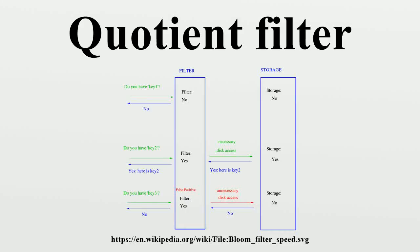A quotient filter, introduced by Bender Eyal in 2011, is a space-efficient probabilistic data structure used to test whether an element is a member of a set. A query will elicit a reply specifying either that the element is definitely not in the set, or that the element is probably in the set.